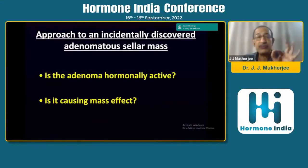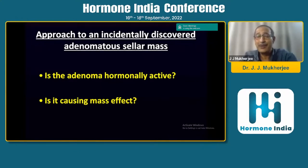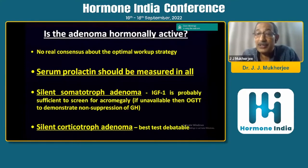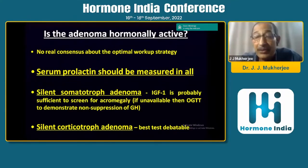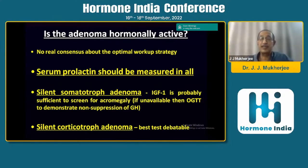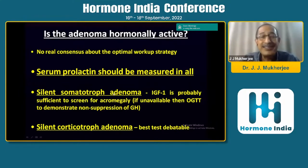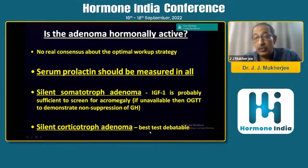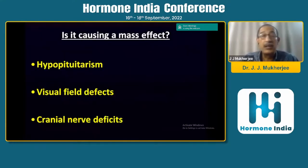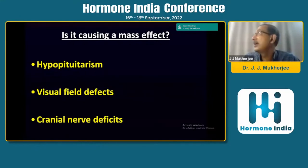Now you have to exclude hormonal activity. Even though there's no clinical Cushing's, acromegaly, or suggestion of prolactinoma, you want to check because there can be subclinical presentations — prolactin can be two or three times elevated with no amenorrhea or galactorrhea. There's no real consensus on the optimal workup strategy, but the Endocrine Society guidelines from 2011 guide you. Serum prolactin should be measured in all patients. For silent somatotrophic adenoma, you could do an IGF-1. For silent corticotrophic adenoma, consider an overnight dexamethasone suppression test, and if it doesn't suppress, a low-dose dexamethasone suppression test. Look for features of hypothyroidism, full hormonal evaluation, visual field effects, and cranial nerve deficits.